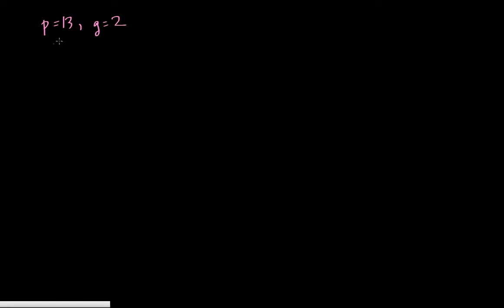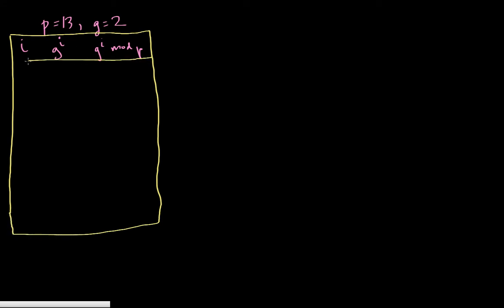Let's imagine a table here where we're going to consider i, and we'll do g to the i and g to the i mod p so you can see how everything works. Let me pick some different colors for the rows so it's more clear what's happening.